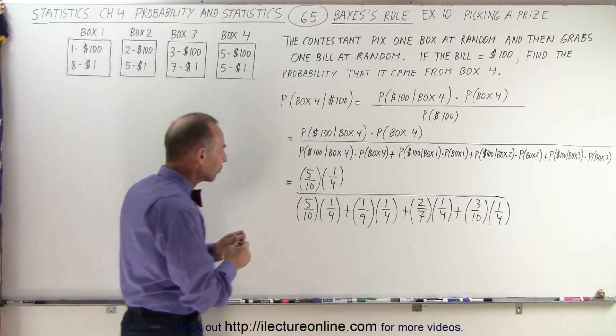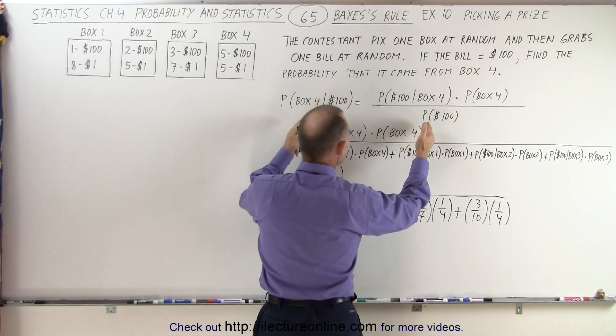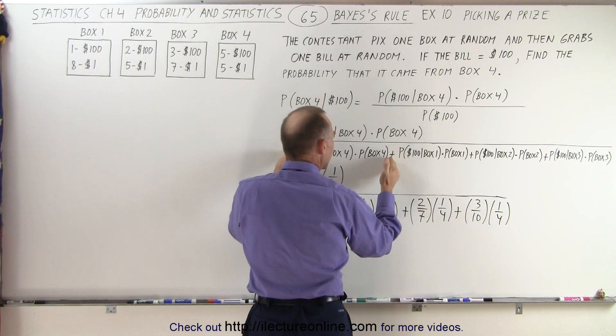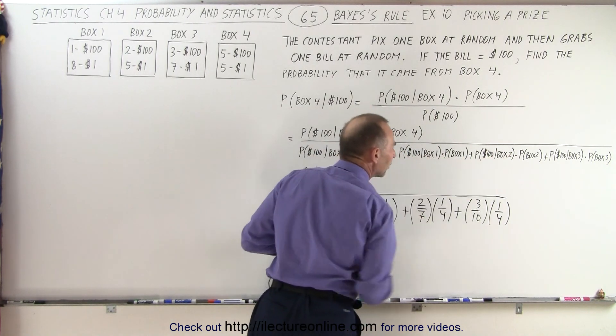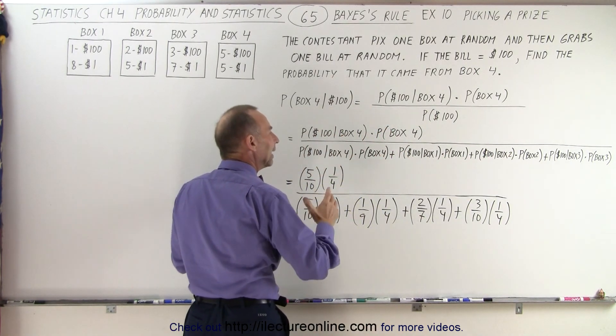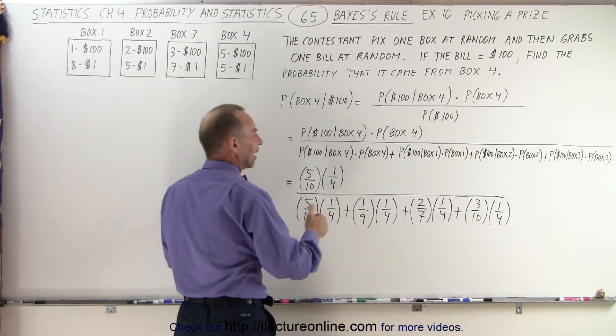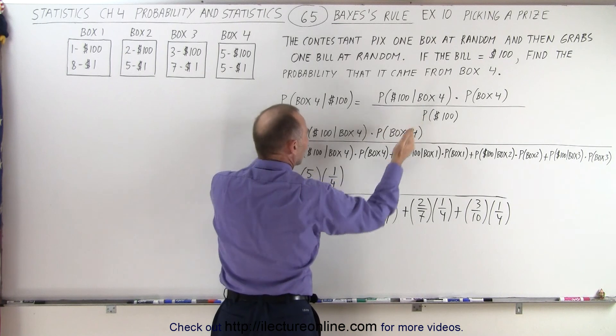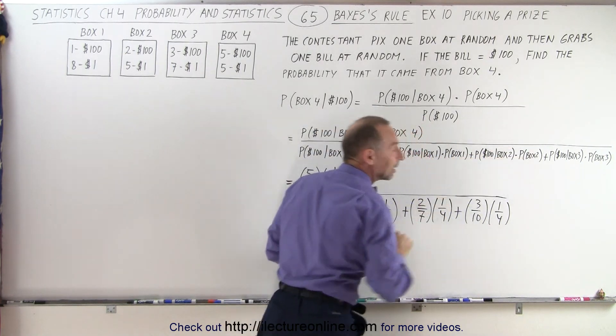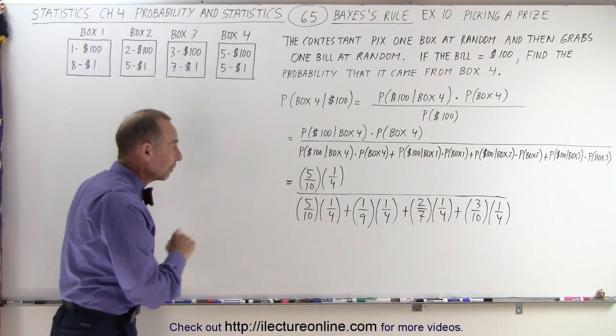The reason why I put box four first is because we always repeat this quantity. Always it's repeated in the denominator, plus whatever other possibilities we have. And so it might not be a bad idea to just go one through four, realizing that's the case, but I'd just like to show you that this is always exactly the same, plus all the other probabilities of getting a hundred dollar bill from the other boxes.